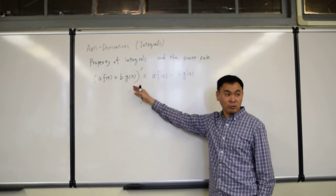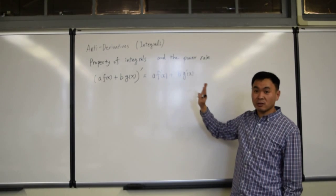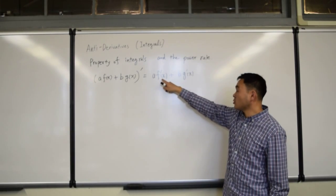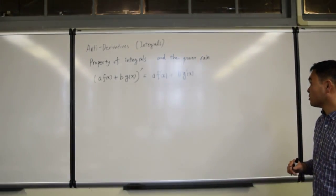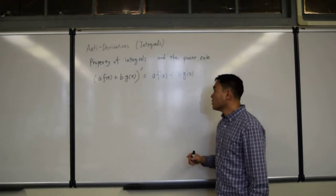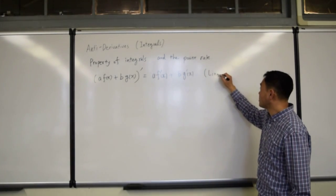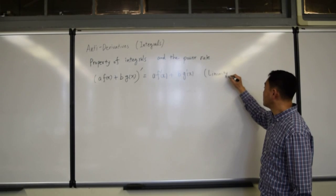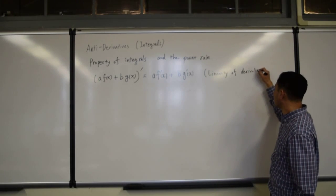So when you differentiate something like this, these a and b go unchanged, and you only differentiate these functions attached to these coefficients. That's what we observed, and we call this linearity of derivatives, or differentiation of derivatives.